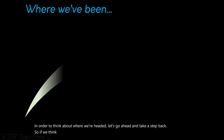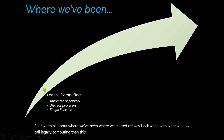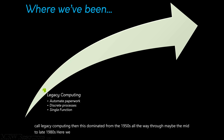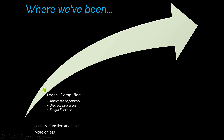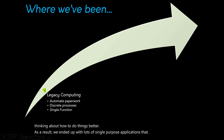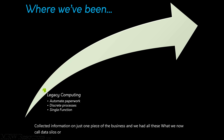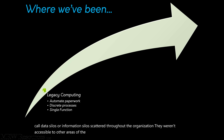If we think about where we've been, we started off way back when with what we now call legacy computing, which dominated from the 1950s all the way through maybe the mid to late 1980s. Here we had big corporate mainframes. We're automating a single business function at a time, focusing on streamlining the paperwork of existing tasks, not really thinking about how to do things better. As a result, we ended up with lots of single-purpose applications that collected information on just one piece of the business — what we now call data silos or information silos scattered throughout the organization. They weren't accessible to other areas, so the left hand often didn't know what the right hand was doing.